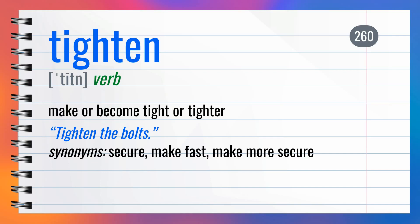Tighten. Tighten means make or become tight or tighter. For example: Tighten the bolts. Synonyms: Secure, Make fast, Make more secure.